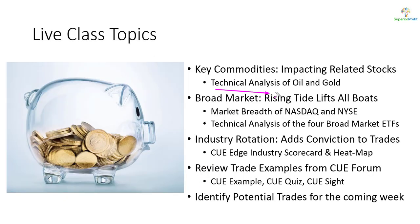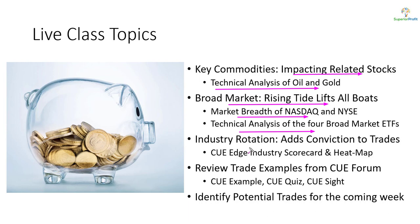In today's topics we will look at oil and gold using technical charts, as they tend to impact related stocks. When swing trading stocks, we like to trade them in the market's direction, so we'll study market direction. In addition to aligning our trades with market strength, we like to align them with industry strength as well. We'll study industry strength using scorecard and heat map, and along the way we may review some trade examples from our traders forum and look for potential trades for the coming week.